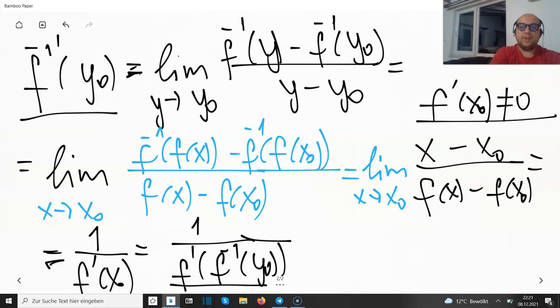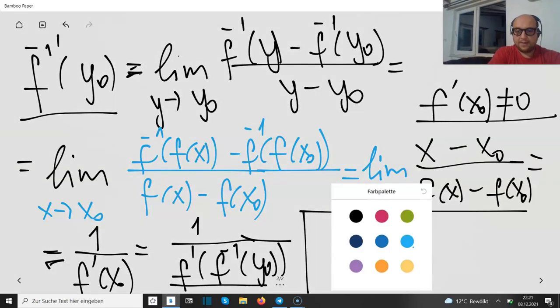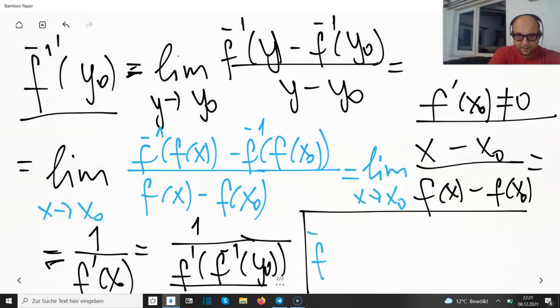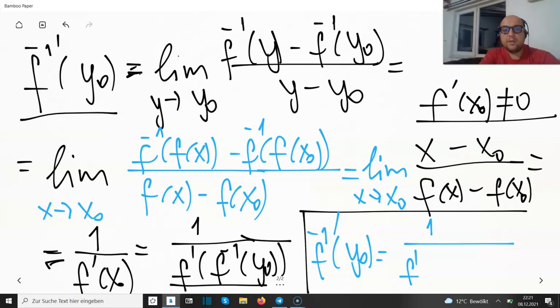What do we have now? We are having (f^(-1))'(y₀) equals 1 divided over f'(f^(-1)(y₀)). And not f^(-1), you see. So I actually do not even have to know the inverse function itself, which is kind of really crazy. And this is the corresponding value here.